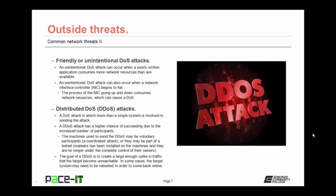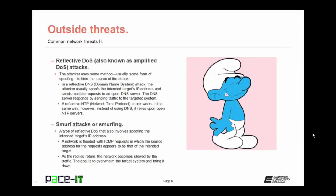The goal of the DDOS is to create a large enough spike in traffic that the target becomes unreachable. In some cases the target system may need to be rebooted in order to come back online. There's the reflective denial of service attack, also known as an amplified DOS. The attacker uses some method — usually some form of spoofing — to hide the source of the attack. In a reflective DNS attack, the attacker usually spoofs the intended target's IP address and sends multiple requests to an open DNS server. The DNS server responds by sending traffic back to the targeted system, and the attacker's hope is that the response from the DNS server will overwhelm the targeted system.